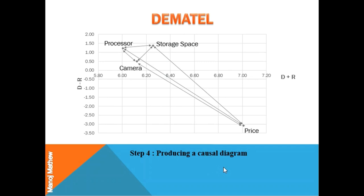The causal diagram explains the concept of direct and indirect effect of various criteria like price, storage space, camera, and processor over each other. It's up to the decision maker whether he wants to set up this threshold value to identify all the criteria which have negligible effect over other criteria.